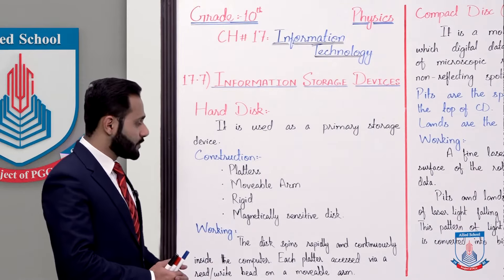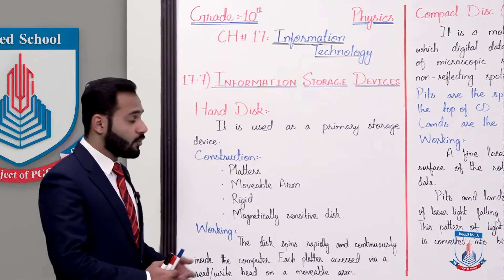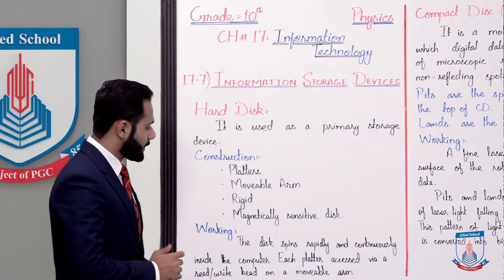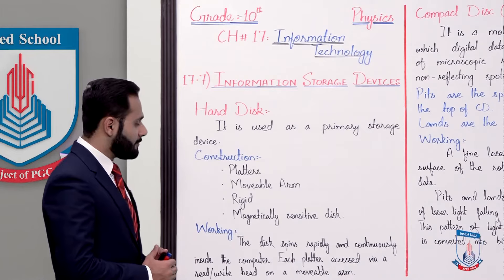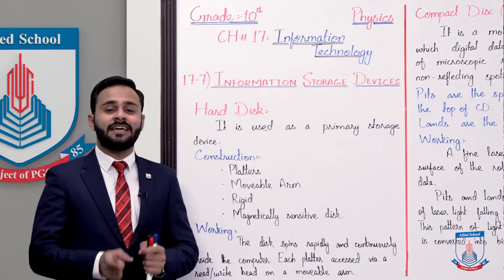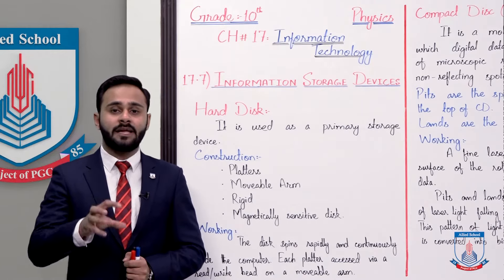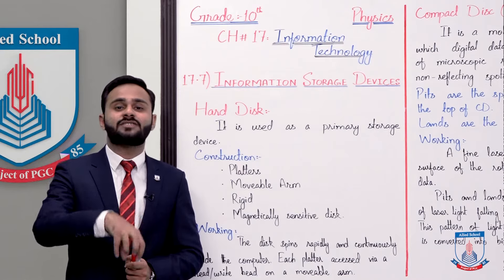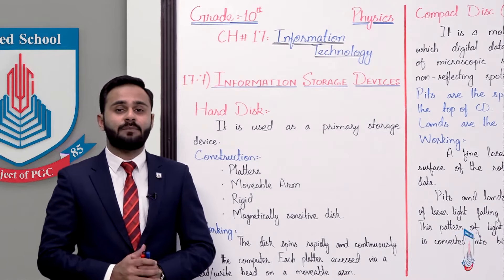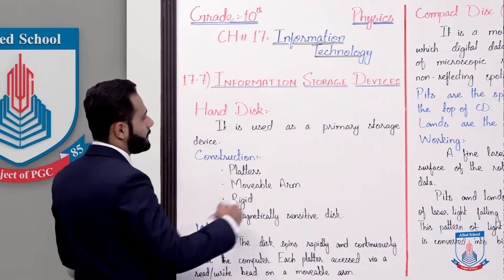Agar hum iski construction dhekhen toh isme kuch platters lagte hain aur isme movable arms lagte hain jo ke har platter ke sath connected hote hain. It is a rigid body and magnetically sensitive disk. Iske upar data jo hai woh magnetically store kiya jata hai. Yahan se hum yeh keh sakte hain ke isme bhi magnetism ka principle istamal kiya jata hai.